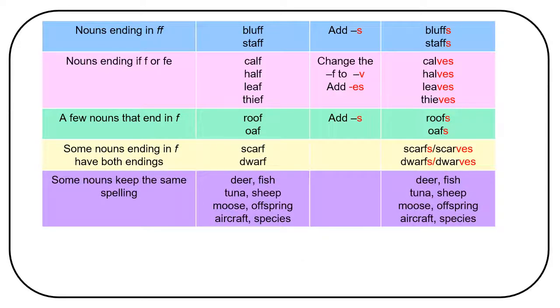Some nouns keep the same spelling, like deer, fish, tuna, sheep, moose, offspring, aircraft, species.